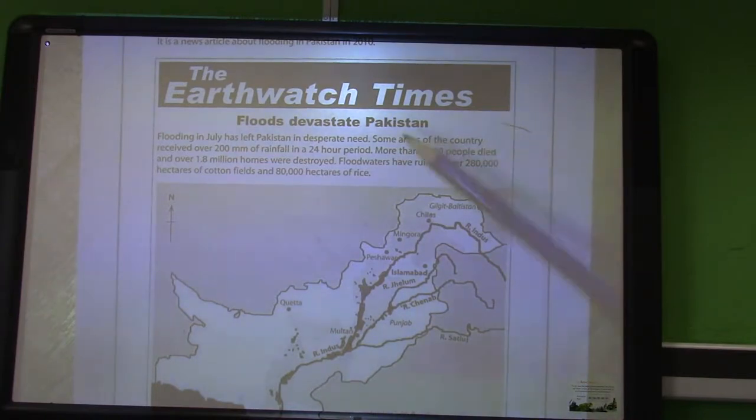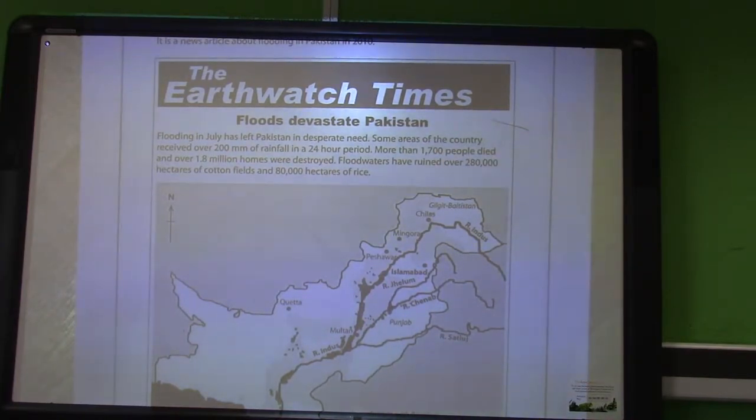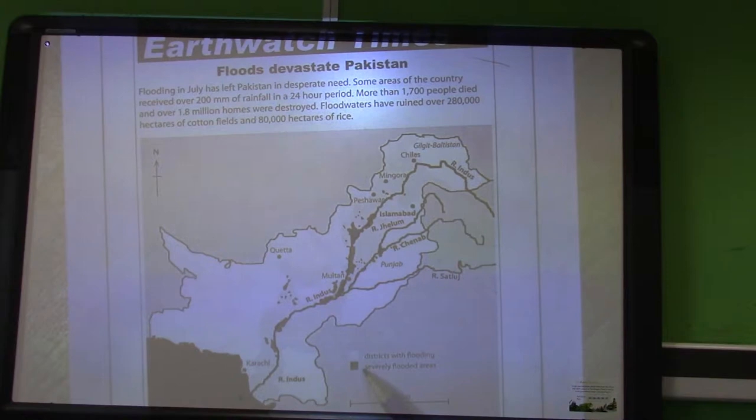We're looking at Pakistan flooding in July. Heavy rainfall, 200 millimeters in a 24 hour period, leaving 1,700 people dead, 1.8 million homes destroyed, and severe flooding. We need to look at the key down the bottom here. The dark area is denoting where we've got severe flooding, and we can see those pockets of black showing us where the severe flooding has actually taken place.